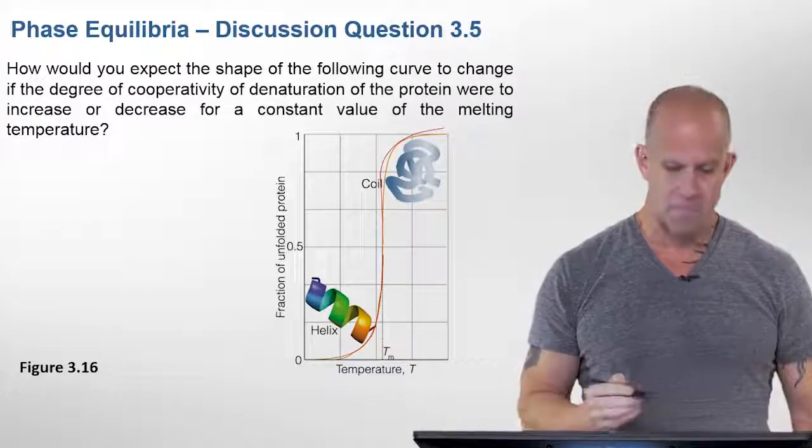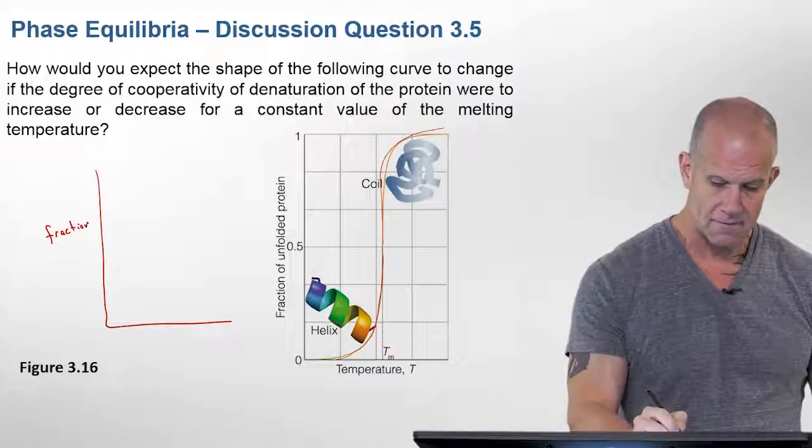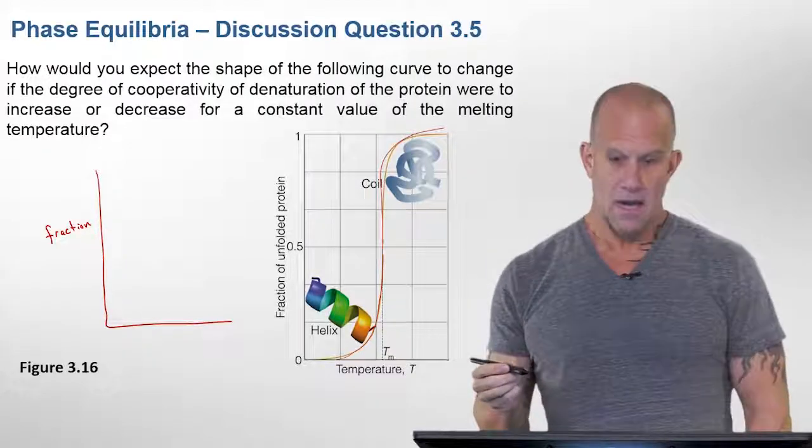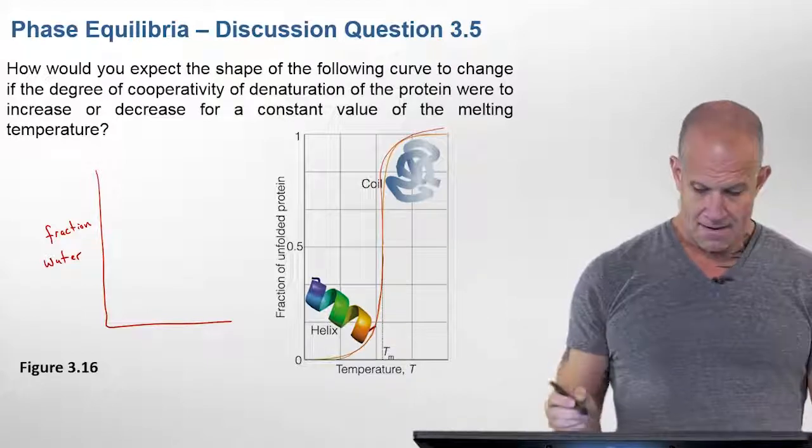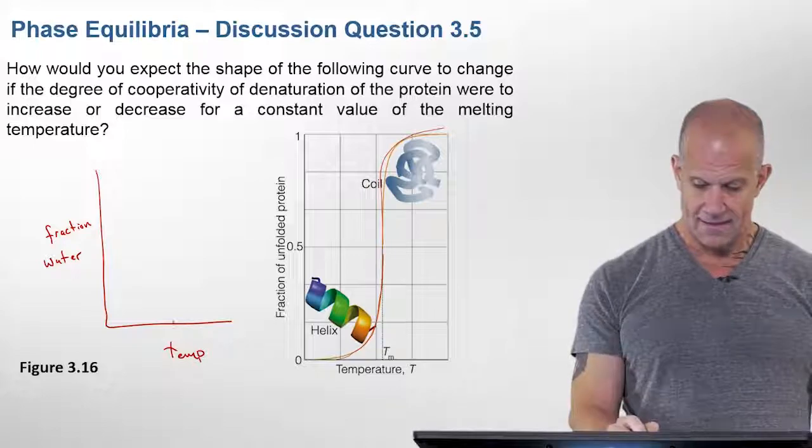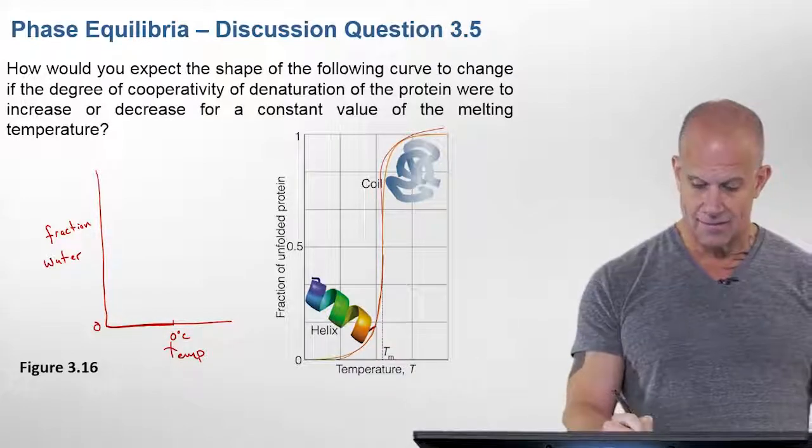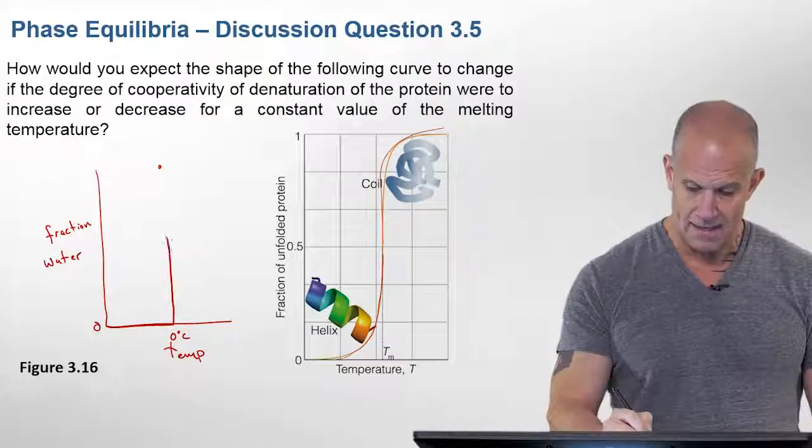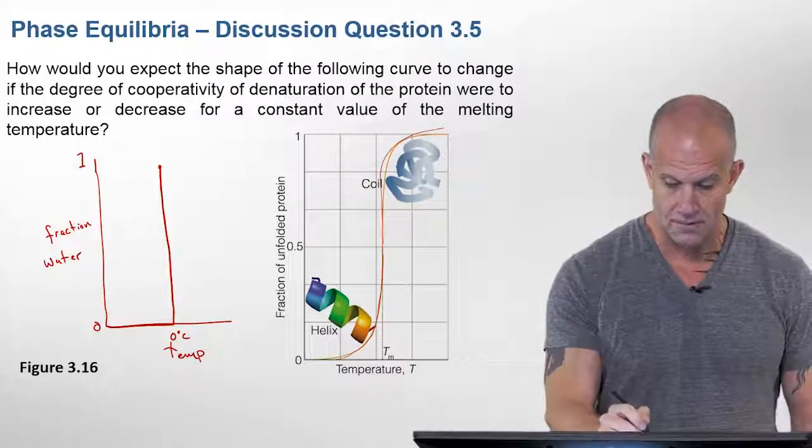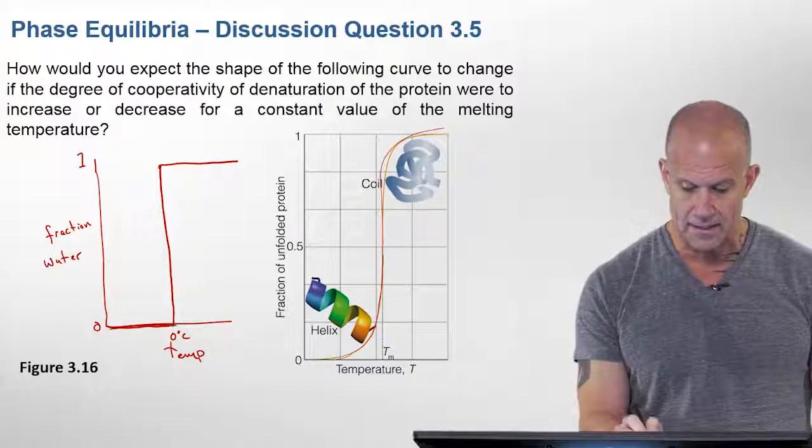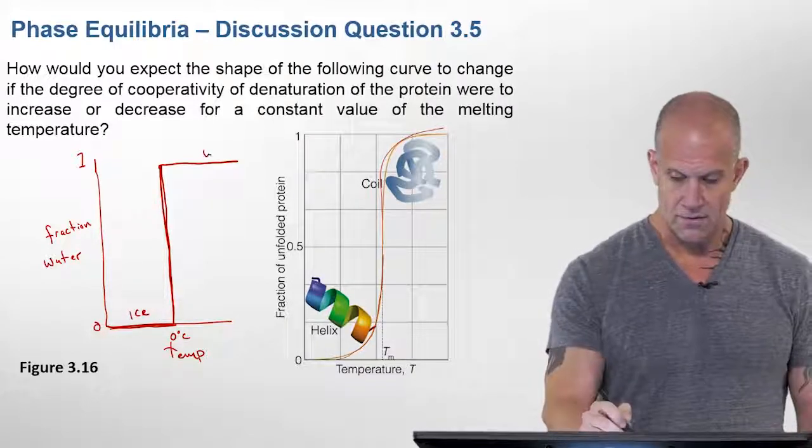For example, the most classic thing we can think of melting, which is if you said the fraction, instead of unfolded protein, if we said the fraction of water. And we looked at the temperature, and this was zero degrees Celsius. So below that, the fraction is going to be zero. And then at zero degrees, we're going to go systematically at that temperature to something that is a fraction of one or 100% like this. And then that is a completely discontinuous transition, where this is changing from ice to water.